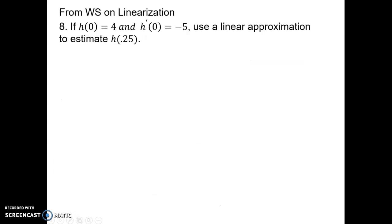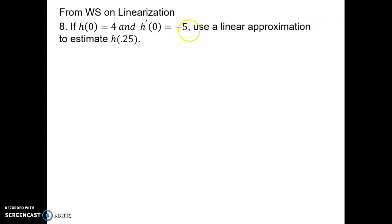This last example shows the power of the linearization formula more clearly, because often in life — especially in business — we're given a specific point in time. Say today is t equals 0, and my cost function for my company is about $40,000, so I put a 4 there. At this particular point in time I might know how the cost is changing — in this case it might be changing by $50,000 per additional month in my function. Notice I don't have an actual function here; I just have data about the actual value of the function at a given point and how that function is changing at that particular point in time.